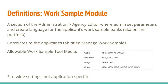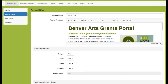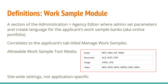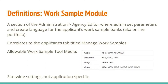The next definition is Work Sample Module. This is a section of the Administration tab, Agency Editor sub-tab, where admin will set parameters and create the language for the applicant's Work Sample Banks, also known as the Online Portfolio. This correlates to the applicant's tab titled Manage Work Samples. Remember that this is a site-wide setting — it's not application specific, so this is setting the parameter for your applicant's entire lifetime on your Go Smart site, not at the application level.